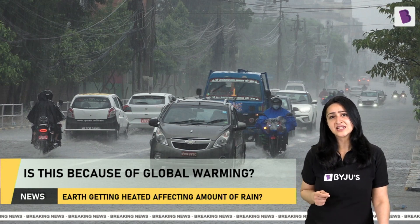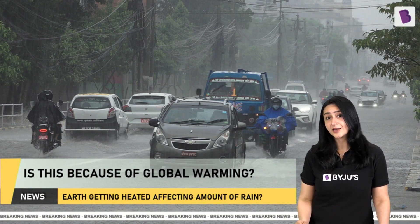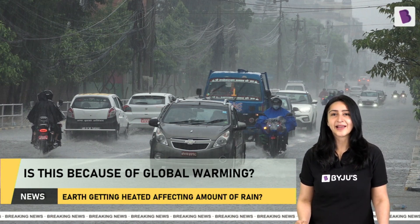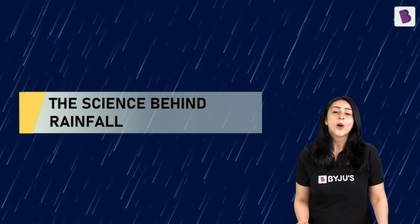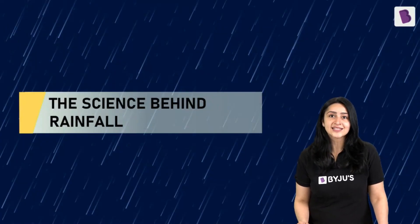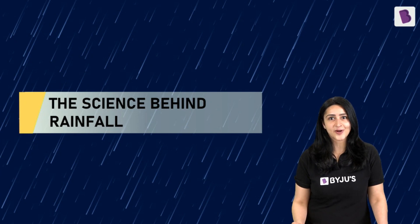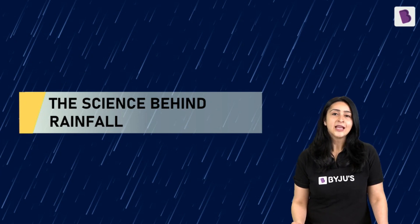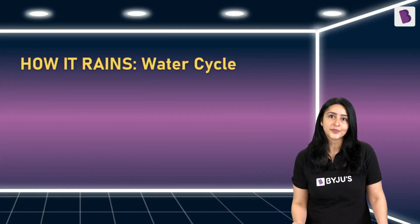You might have heard people say that it's because of global warming that it's raining more. But how exactly does the earth getting heated up affect the amount of rain? To answer this, we first need to understand the science behind rainfall.